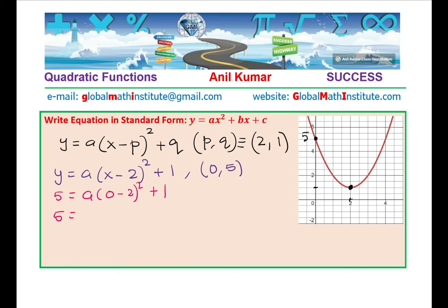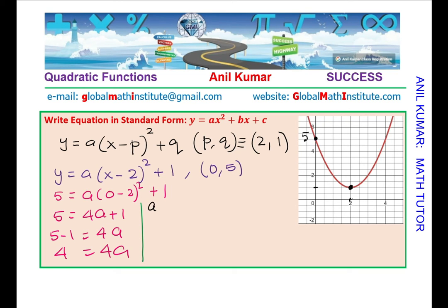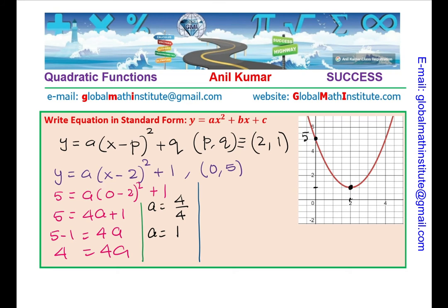We get 5 equals a times (0 minus 2) squared plus 1. That is 4a plus 1, so 5 minus 1 is 4a, which means 4 equals 4a, giving a equals 1. Once we find the value of a, we know the quadratic equation: y equals (x minus 2) squared plus 1. Now to write it in standard form, we expand and simplify.